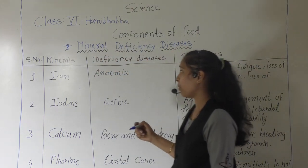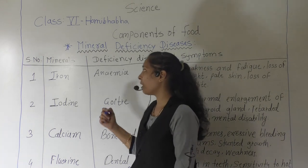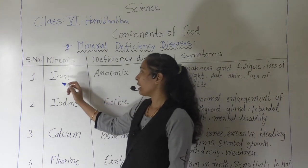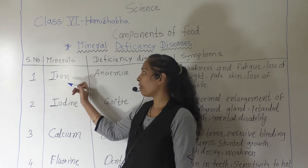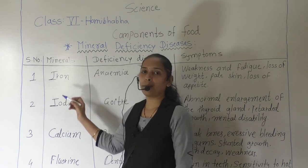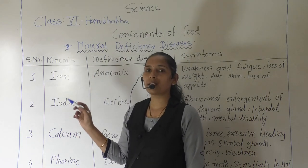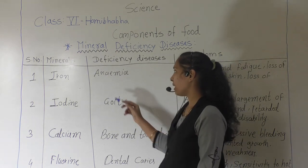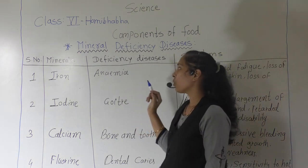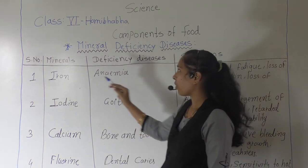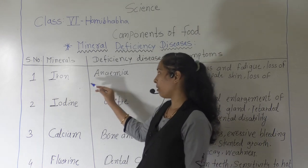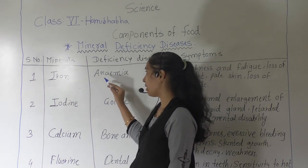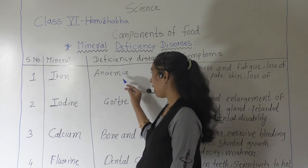So let's discuss which are the mineral deficiency diseases. The first mineral is iron. If the body does not get the proper amount of iron, the body will suffer from a disease. The name of that disease is anemia. Because of the lack of iron in our diet, the person will suffer from the deficiency disease that is anemia.